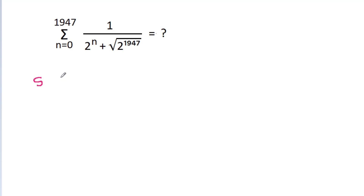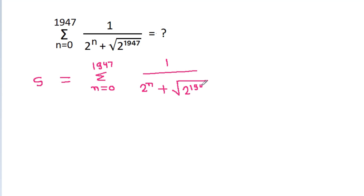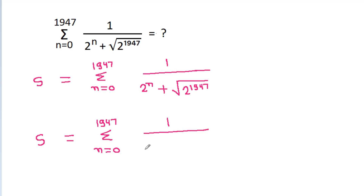Suppose S is equal to the summation from n equals 0 to 1947 of 1 divided by 2^n plus the square root of 2^1947. Note that the square root of a^x equals a^(x/2).